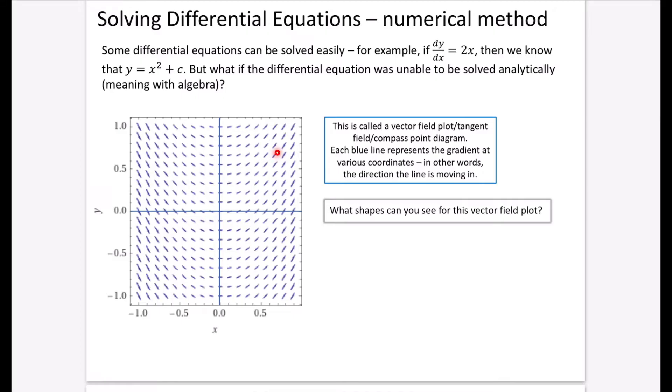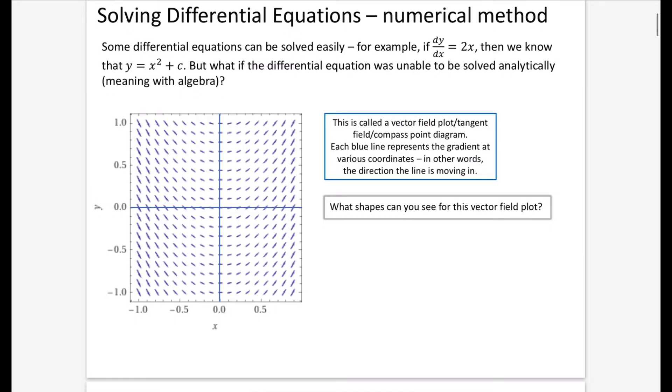For example, if we have a look at this little point here, we can see that the gradient of the line, if it were at this point, would be going in that direction. And understandably, when x is equal to zero, which is obviously this vertical line that we've got here, you can see that all of the lines have got a zero gradient, because the gradient of the line is the x coordinate multiplied by two, and x was equal to zero along that line. I want you to just think to yourself, what shapes can you see for this vector field plot?